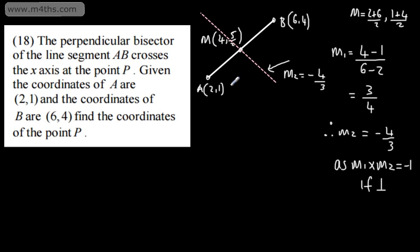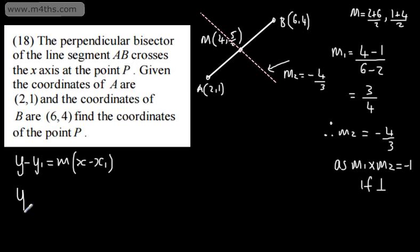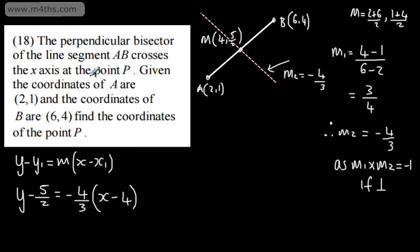Finding the equation of the perpendicular bisector using y minus y1 = m(x minus x1): we have gradient negative 4/3 and pass through the midpoint (4, 5/2). So y minus 5/2 = negative 4/3 times (x minus 4). That is the equation of the perpendicular bisector.